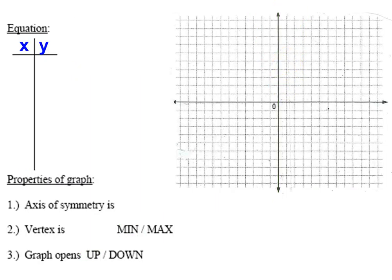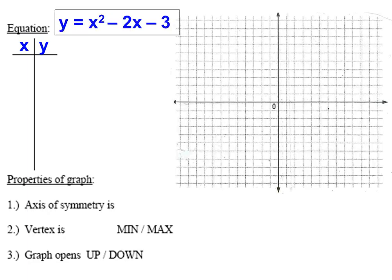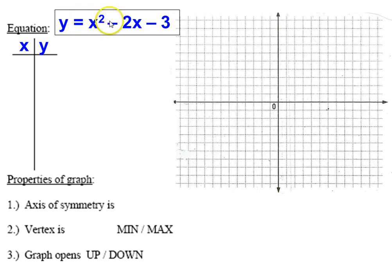Now let's look at another example and compare. We'll graph y equals x squared minus 2x minus 3. Notice we're still working with a quadratic equation because the variable is being squared, but now there's another x term as well. When I plug in a value for x, I have to plug it into all the x terms — not just the x squared term.